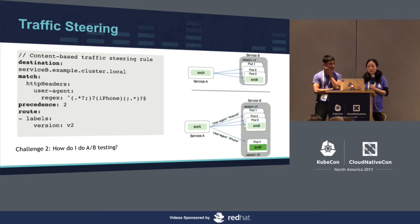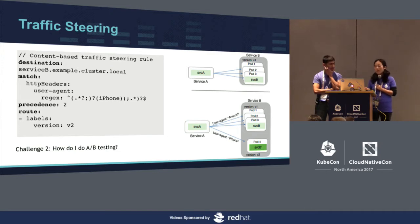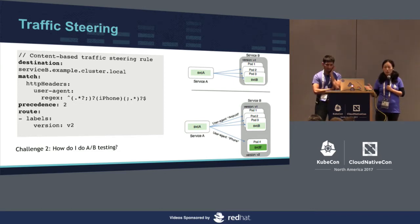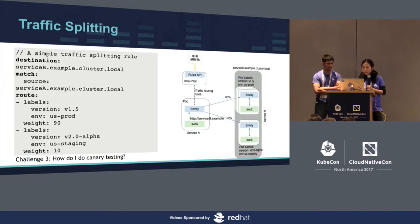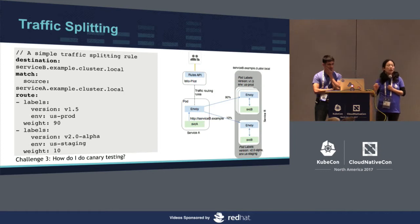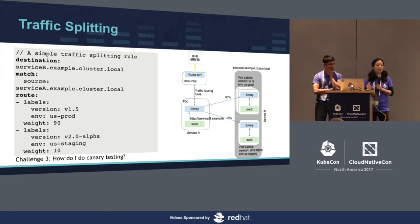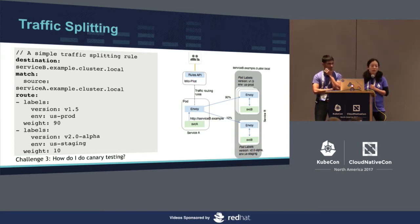Traffic steering — as an example, how do I do A/B testing? I wrote a new version of the review system and I just want to test it for myself, maybe for my iPhone, or maybe for all iPhone users. Traffic steering is typically based on request headers or cookies to roll out to a specific set of users first. And then traffic splitting: this is another route rule where we say we want to route 90% to production and 10% to the new alpha version for canary testing.